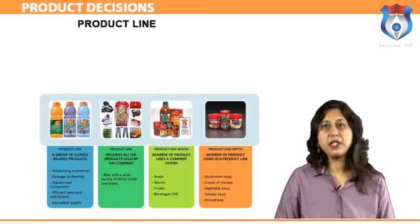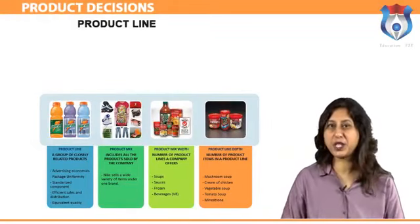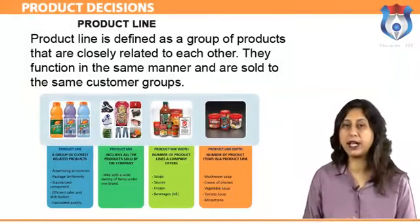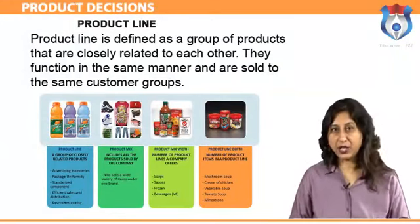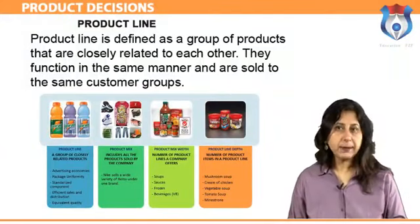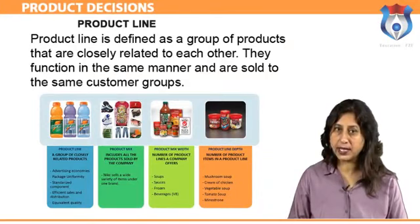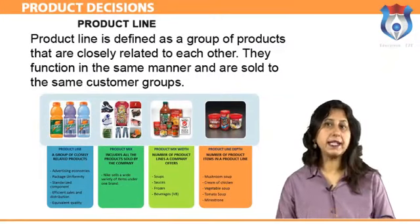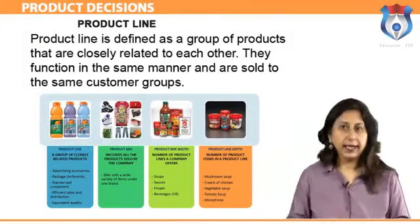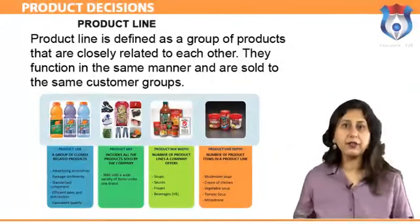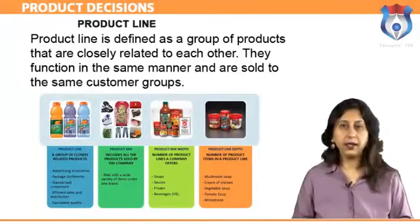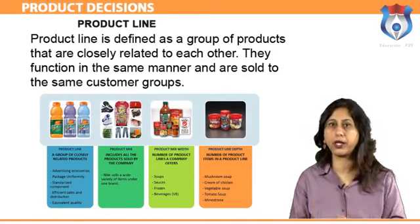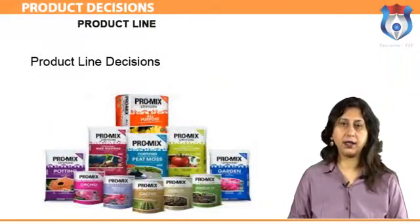Product line is defined as a group of products that are closely related to each other — they function in the same manner and are sold to the same customer groups. These products are marketed from the same types of outlets and fall within a specified price range. Product line characteristics include: line depth, which refers to the number of product variants in a line; line consistency, which refers to how closely related the products in the line are; and line vulnerability, which refers to the percentage of sales or profits derived from only a few products in the line.